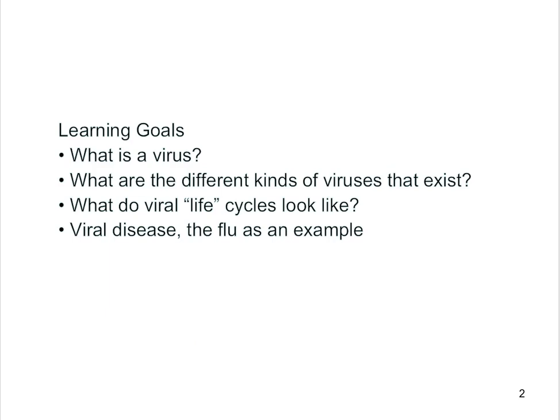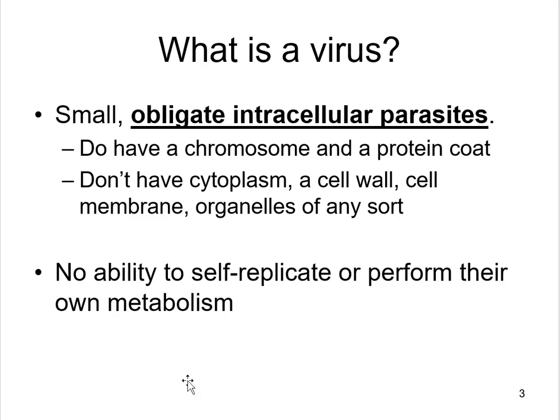Viruses are small obligate intracellular parasites. They have one or more chromosomes made of DNA or RNA. That chromosome, or those chromosomes, are wrapped in a protein coat called a capsid — C-A-P-S-I-D — and sometimes that is wrapped in an envelope of plasma membrane essentially stolen from the previous host cell.